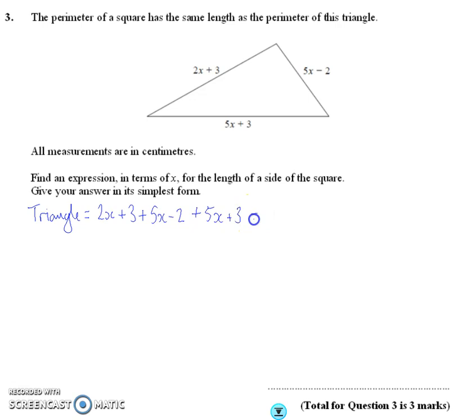So when I add all that up, I'm going to get 2, 7, 12x here, 3 take away 2 is 1, add on 3 is 4.